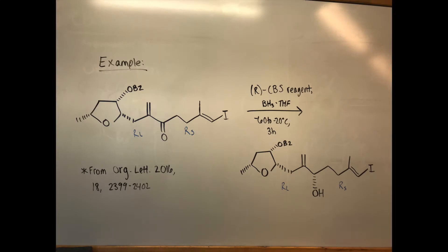Now let's take a look at this literature example. The carbonyl toward the middle of the molecule has its small group to the right side and its large group to the left. When it is reacted with RCBS under these conditions, the carbonyl is reduced to an alcohol and a new stereocenter is formed at the carbon attached to the alcohol. The alcohol is facing away from us in the product, with the small and large groups still on the right and left, respectively.